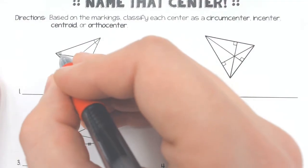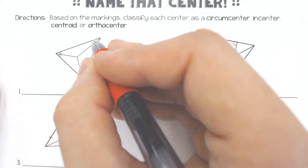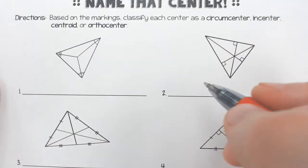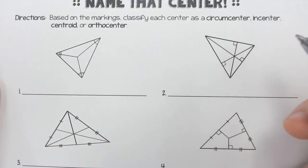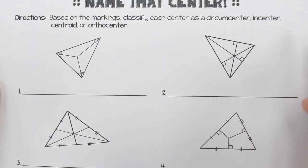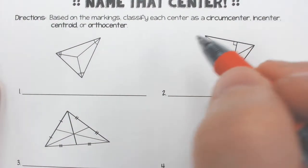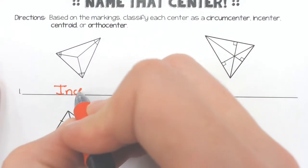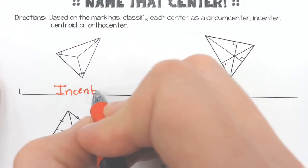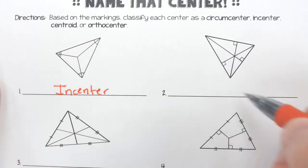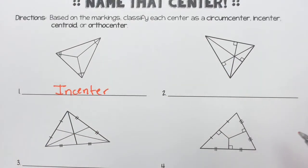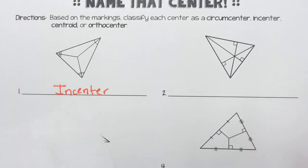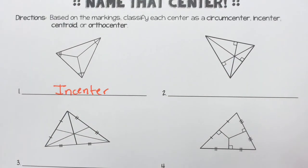In the first problem, it looks like we took the angles and cut them in half. We need to figure out which center cuts the angles in half. The answer is the incenter — you'd go back to your reference guide and confirm that the incenter cuts the angles in half.